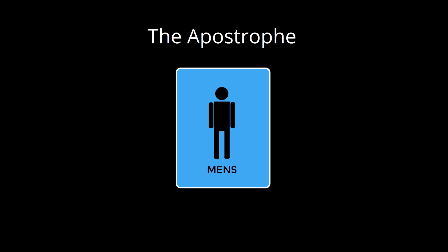Let's talk about the apostrophe, and we'll focus especially on two major uses: contraction and possession. One thing you may have noticed is that in public places the apostrophe is often misused. Apostrophes go missing or are sometimes added in the wrong places.